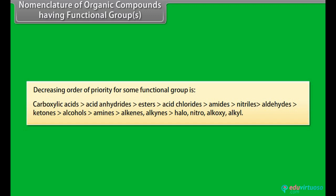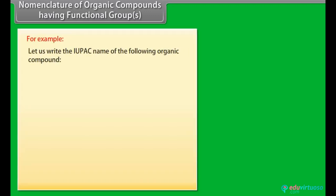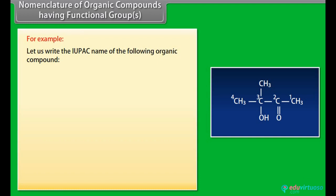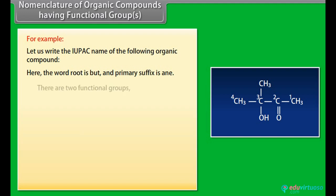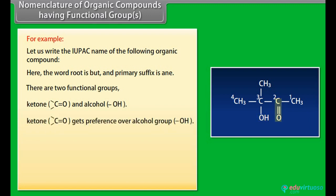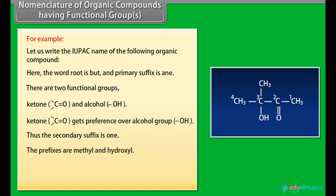The decreasing order of priority: carboxylic acids, acid anhydrides, esters, acid chlorides, amides, nitriles, aldehydes, ketones, alcohols, amines, alkenes, alkynes, halogens, nitro, alkoxy, alkyl. For example, let us write the IUPAC name of the following organic compound. The word root is but- and the primary suffix is -ane. There are two functional groups: ketone and alcohol. Ketone gets preference over the alcohol group. Thus the secondary suffix is -one. The prefixes are methyl and hydroxyl. Thus, the name is 3-hydroxy-3-methylbutan-2-one.